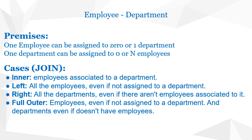The right join is the opposite — we want to get all the departments even if they are not associated to an employee. If the department has employees we retrieve that information; otherwise we get empty values. And finally the full outer join — we get all the employees and all the departments. For entries that don't have a matching pair on the other side, we just get null values. Now let's go into the console to execute some examples and put into practice what we just discussed in theory.